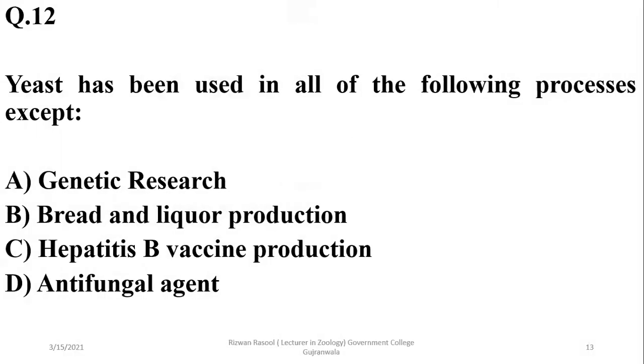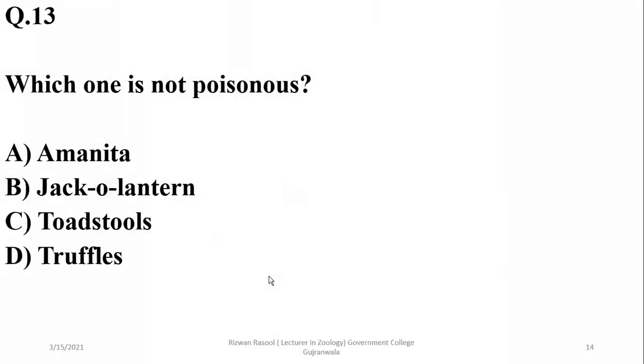Yeast has been used in all of the following processes except antifungal agent, because they are themselves fungi, so the right option is D. Which one is not poisonous? Amanita, Gyromitra, and Amanita are poisonous fungi, but truffles are not. They are edible, so the right option is D.